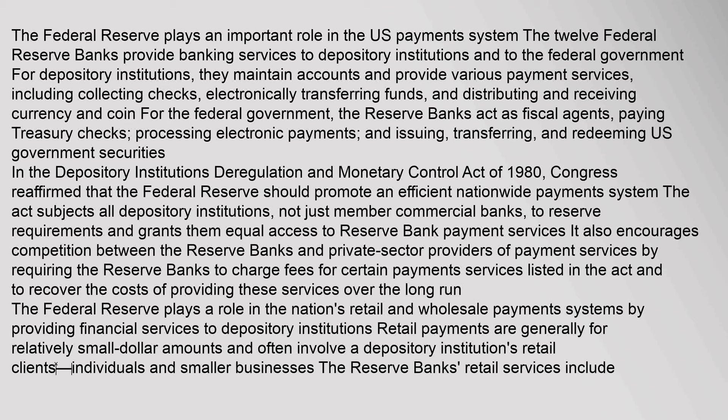The Federal Reserve plays an important role in the U.S. payments system. The 12 Federal Reserve Banks provide banking services to depository institutions and to the federal government. For depository institutions, they maintain accounts and provide various payment services, including collecting checks, electronically transferring funds, and distributing and receiving currency and coin. For the federal government, the Reserve Banks act as fiscal agents, paying treasury checks, processing electronic payments, and issuing, transferring, and redeeming U.S. government securities. The Depository Institutions Deregulation and Monetary Control Act of 1980 reaffirmed that the Federal Reserve should promote an efficient nationwide payment system.